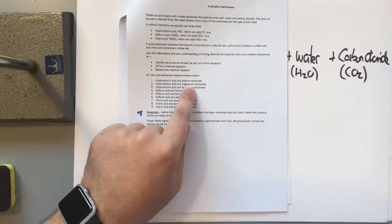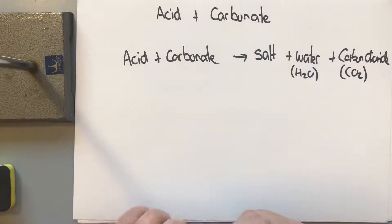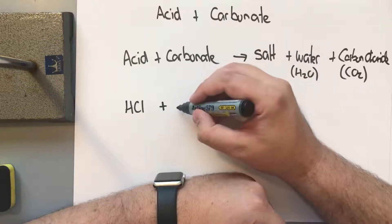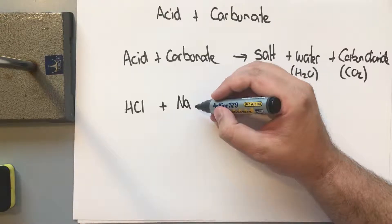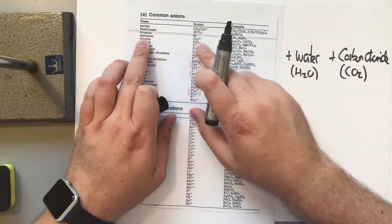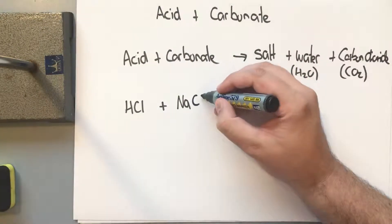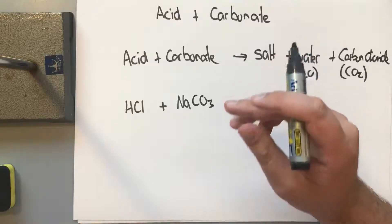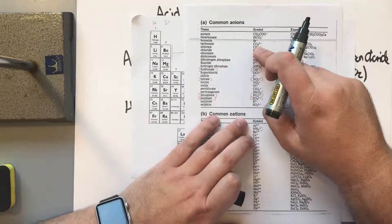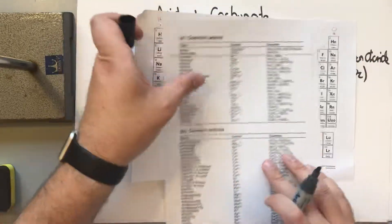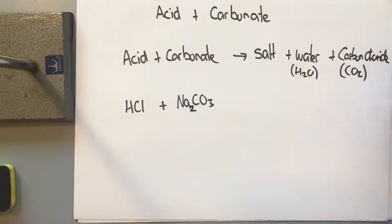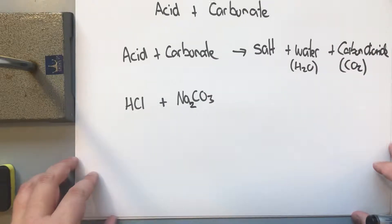Let's look at the first example: hydrochloric acid plus sodium carbonate. Hydrochloric acid is HCl, and sodium carbonate is Na₂CO₃. If we look at our common anion sheet, carbonate is CO₃ with a 2- charge. Sodium has a valency of 1+, carbonate has a valency of 2-, so we do our swap and drop, which tells us we need two sodium atoms to bond with the two valency bonds of the carbonate.